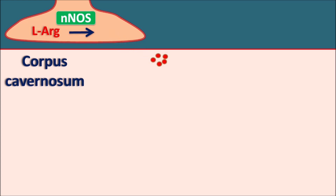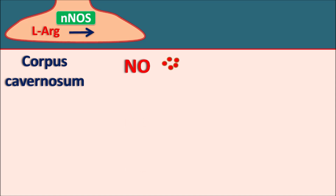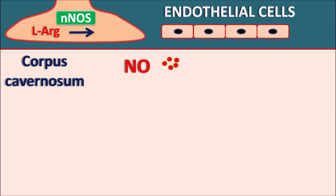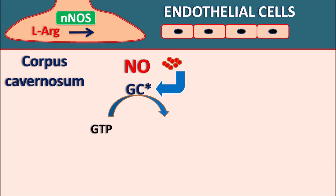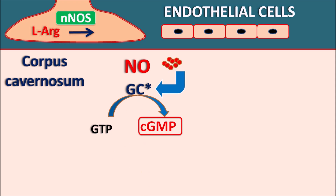On neuronal stimulation, nitric oxide is synthesized and released into the corpus cavernosum. Endothelial cells can also release nitric oxide into the smooth muscle. The released nitric oxide stimulates the guanylyl cyclase (GC) system. When guanylyl cyclase is activated, it converts GTP into cyclic GMP. Cyclic GMP is the important secondary messenger that produces relaxation of this smooth muscle.